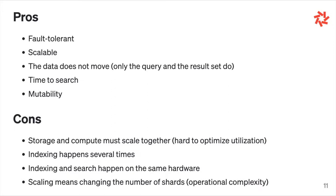What's also great is that the data doesn't move — only the query, which is small, and the result sets move. So you don't move much data and time to search is really good. Time to search is the delay between the moment data was added and when it can be queried. Because nodes work locally on SSDs and often have everything in memory, you can add the document to the index quickly. Because of the partitioning mechanism, all versions of a document are on the same partition, so it's also a good architecture for mutability.